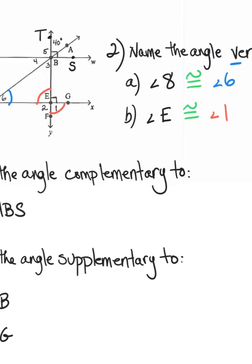Next is complementary. Complementary means that the angles add to 90 degrees. We want the angle that's complementary to angle ABS. If you notice, there's a right angle symbol right next to ABS. The angle that complements ABS and makes both angles add to 90 degrees would be angle ABT. So together, ABT and ABS add to 90 degrees.